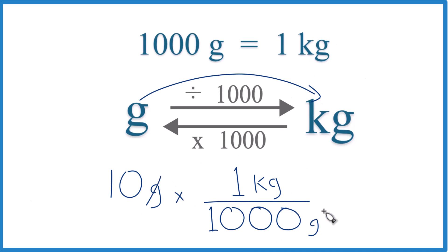Grams on the top and bottom cancel out like before. 10 grams times 1 kilogram. So 10 kilograms divided by 1,000. That gives us that 0.01 kilogram that we got before.